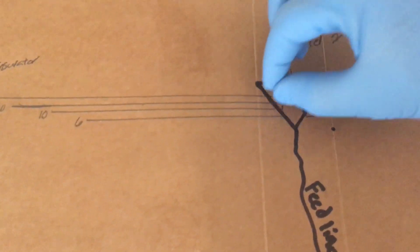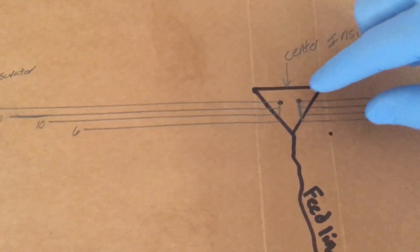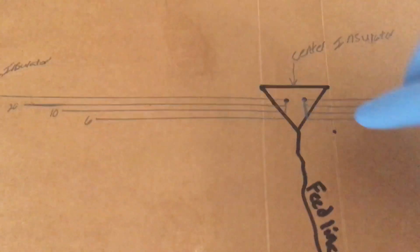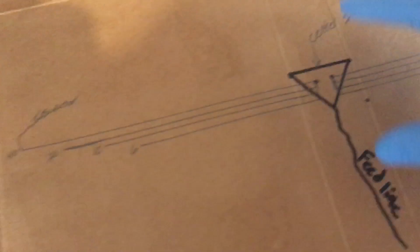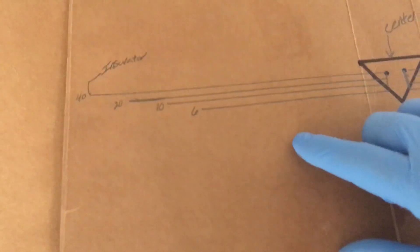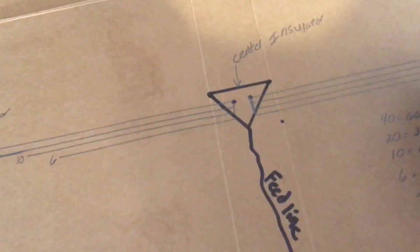I just crimped all the wires together on one ring terminal on each side and your feed line. So this drawing here is good for 40, 20, 10, and 6 meters.